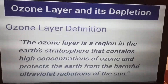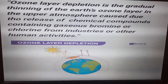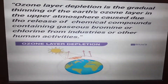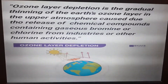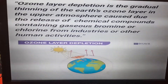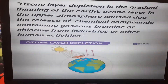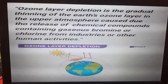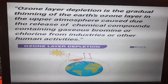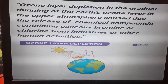Ozone layer depletion is defined as the gradual thinning of the Earth's ozone layer in the upper atmosphere, due to the release of certain chemical compounds containing bromine or chlorine, originating from industrial or human activities.